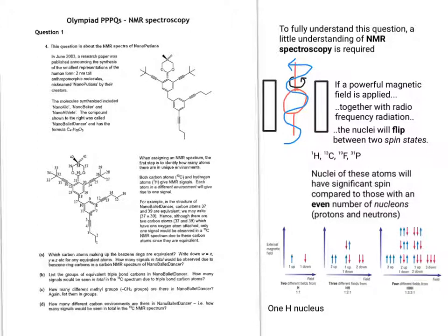One H nucleus can either align with the field or against the field. Two hydrogen nuclei can actually align with or against the field in three different ways. And three hydrogen nuclei can arrange in four separate ways. So what this means is we get different types of peaks.